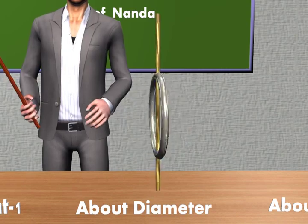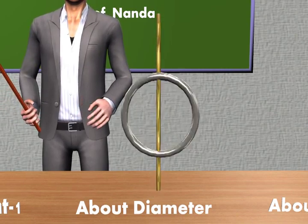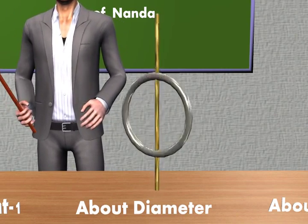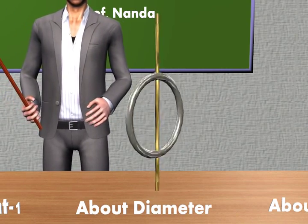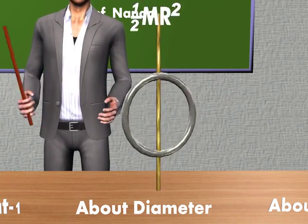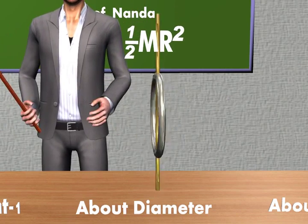Case 3: this is the rotation of a ring about its diameter. Its Moment of Inertia is given by half mR square.